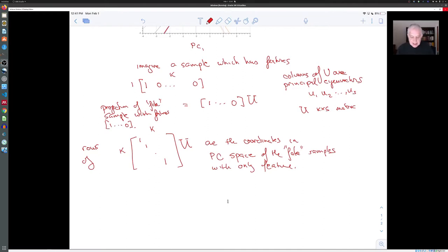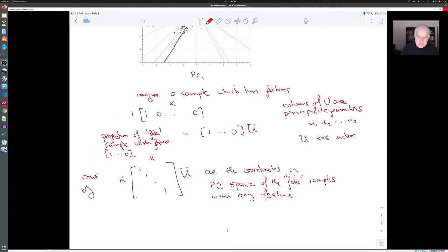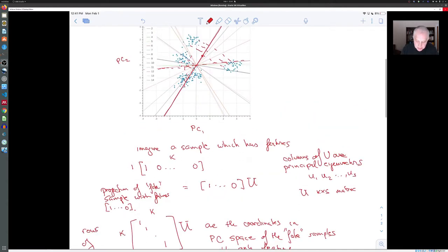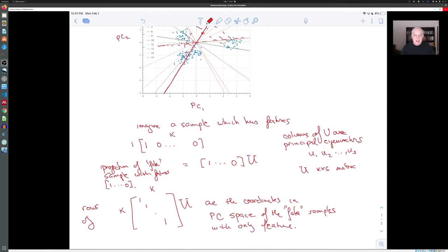So in fact, if you interpret the columns of U as the weights corresponding to the score, so each column of U tells you how to weight each feature in order to make the score to plot the points in the principal component space. Each row of U is a particular point in the principal component space that is where a fake sample, which had just a one in one position for one feature and a zero elsewhere would end up.